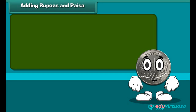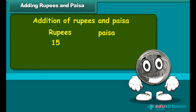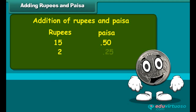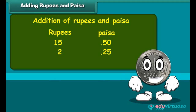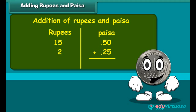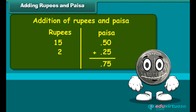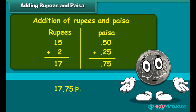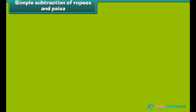Let us learn addition of rupees and paisa. Add 15 rupees 50 paisa and 2 rupees 25 paisa. Write the amounts in two separate columns of rupees and paisa. First add the paisa column: 50 plus 25 paisa equals 75 paisa. Then add the rupees column. The answer is 17 rupees and 75 paisa.